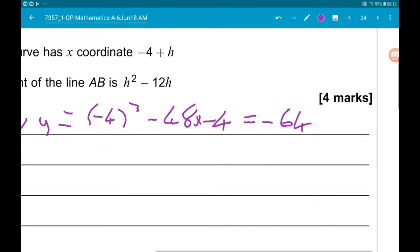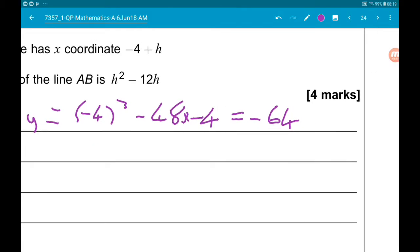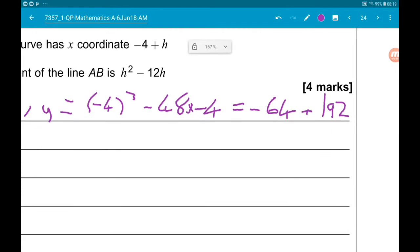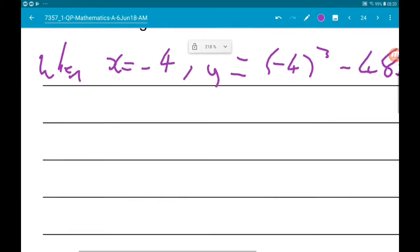We got a minus times a minus, so it's going to be positive. 48 times 4 is 192. This then is going to give us 192 minus 64 is 128. So we now know the coordinates of point A are minus 4, 128.